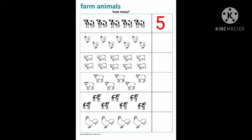In the next row we have hands. So first we have to count all the hands: 1, 2, 3, 4, 5, 6, 7, 8. Yes, we have 8 hands. So we will write the number 8.